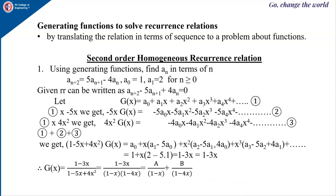Likewise, let us see how to solve a second order homogeneous recurrence relation using generating functions. Suppose a_{n+2} = 5a_{n+1} − 4a_n with a_0 = 1 and a_1 = 2, for n ≥ 0. Bringing all terms to the left: a_{n+2} − 5a_{n+1} + 4a_n = 0.